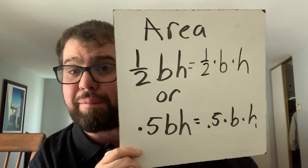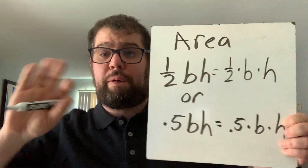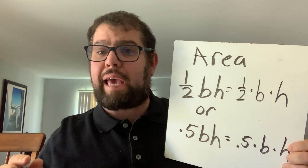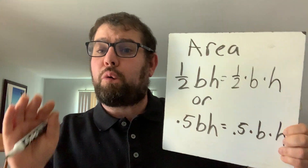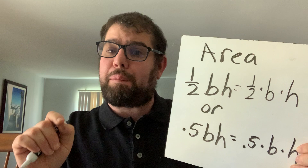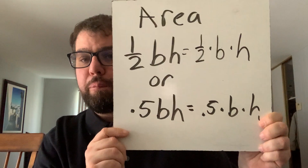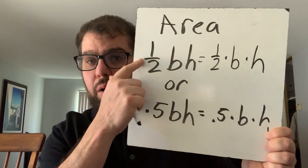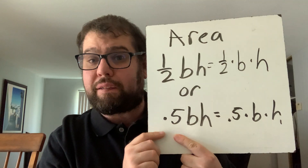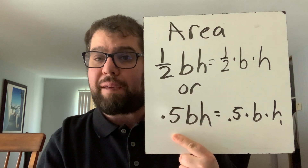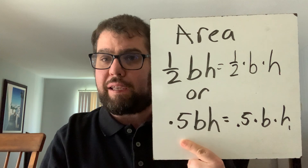For a triangle, the formula is one-half times base times height, which can also be written as ½BH. In our classroom we've used the fraction button on the calculator, but if you don't have that button, one-half equals 0.5 as a decimal. So you can also write the formula as 0.5 × B × H. One-half and 0.5 are the same — use whichever works for you.